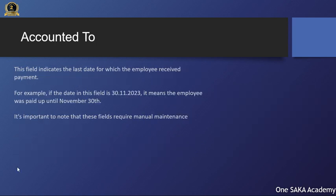The 'Accounted To' field indicates the last date for which the employee received payment. For example, if the date in this field is the 30th of November 2023, it means the employee was paid up until November 30th. It's important to note that these fields require manual maintenance.